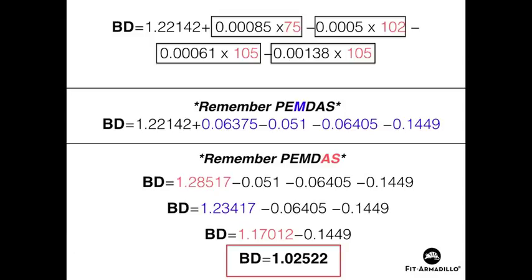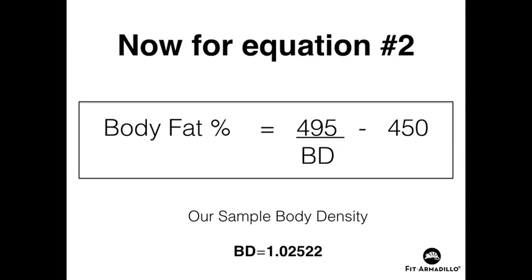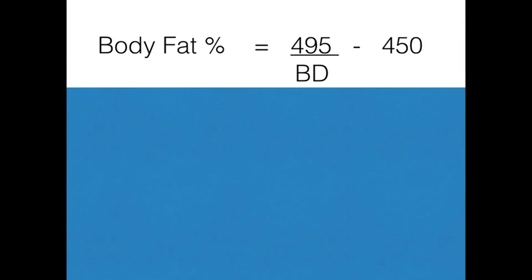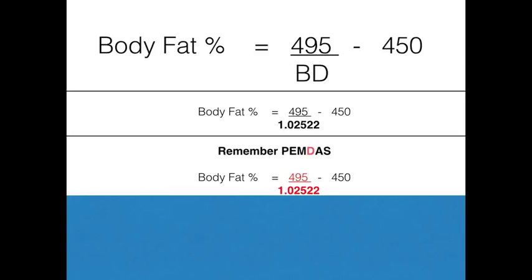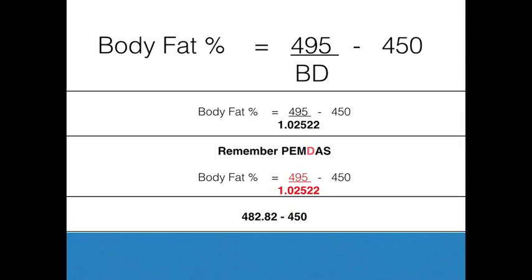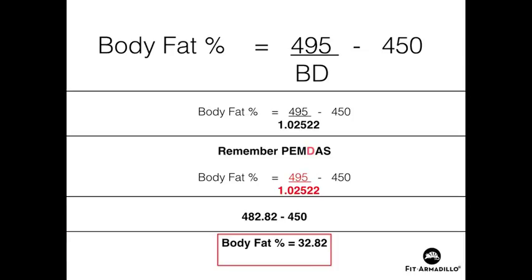We get a body density of 1.02522 — but this is not the body fat percentage yet, because we need equation number two. Equation two is where we actually calculate body fat percentage. We sub in our body density value, then remember PEMDAS: first do division — 495 divided by 1.02522 — which gives approximately 482.82. Then subtract 450, and we have our body fat percentage: approximately 32.82%.